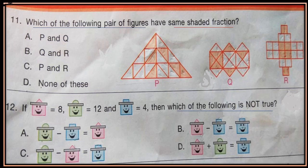Question 12: If pink image is 8, green image is 12, and blue image is 4, then which of the following is not true? Calculate options A, B, C, and D and choose which is not true.